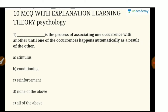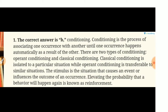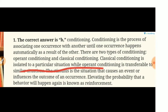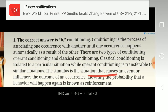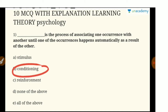Question 1: 'Blank is the process of associating one occurrence with another until one of the occurrences happens automatically as a result of the other.' After reading this question, we see the explanation and find the answer. Conditioning is basically a process that associates one occurrence with another occurrence automatically. Classical conditioning is isolated to a particular situation, while operant conditioning is transferable to a similar situation. So, conditioning is the right answer.